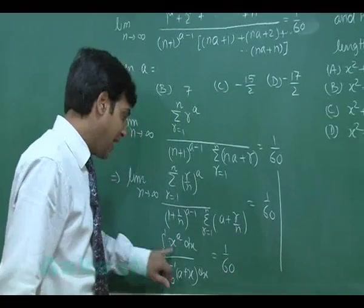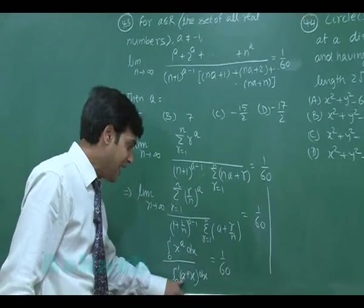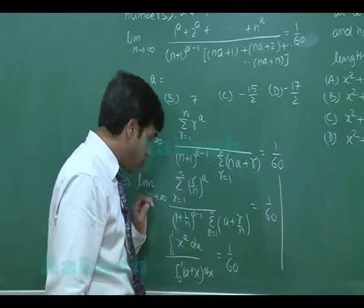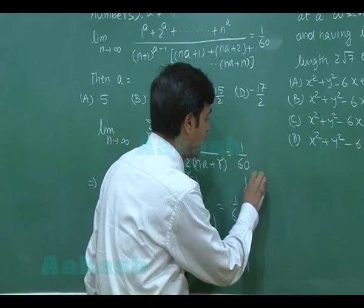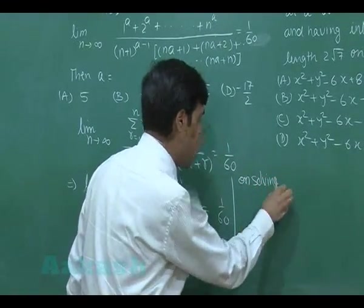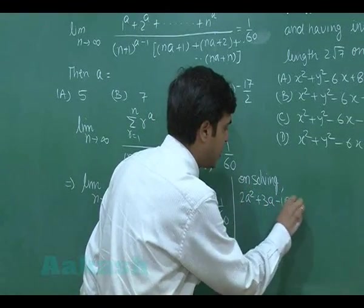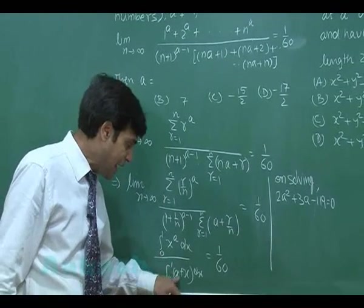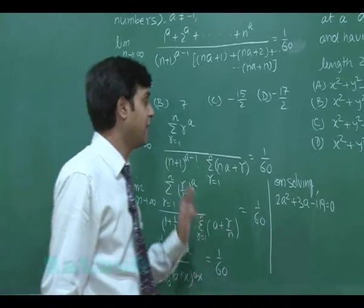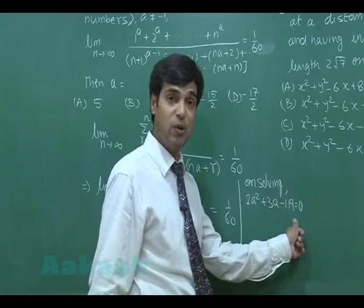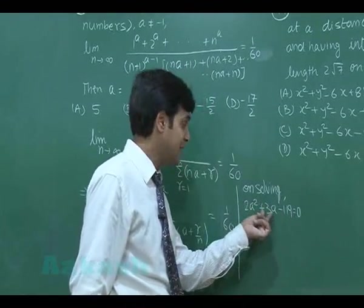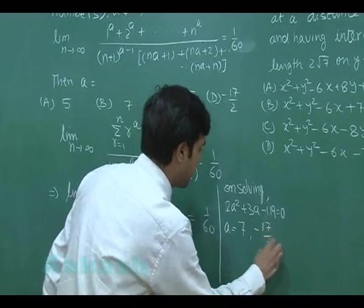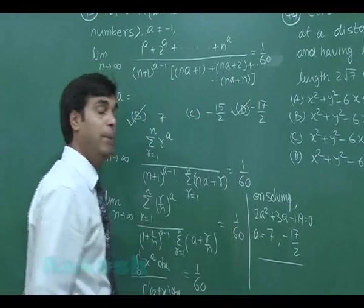It is quite easy to simplify: the numerator evaluates to x to the power (a plus 1) upon (a plus 1), and the denominator gives a·x plus x squared by 2. Applying the limits 0 to 1, cross-multiplying and simplifying gives the quadratic equation 2a² plus 3a minus 119 equals 0. Factoring 119 times 2 as 17 times 14, we get values of a as 7 or minus 17 by 2, so the correct answers are B and D.